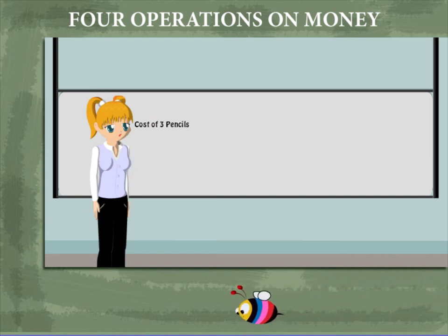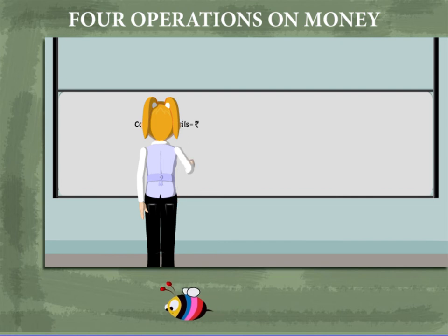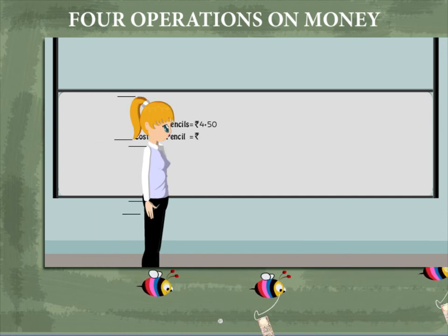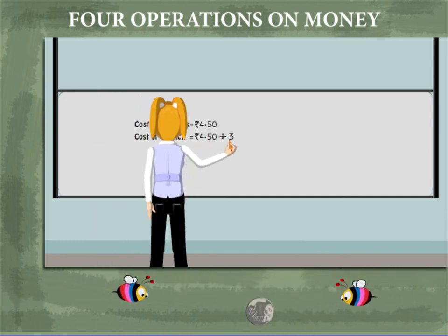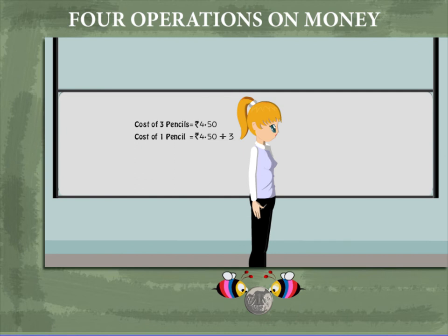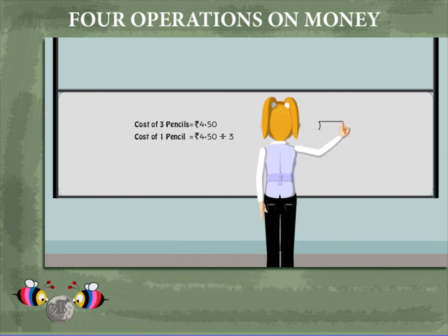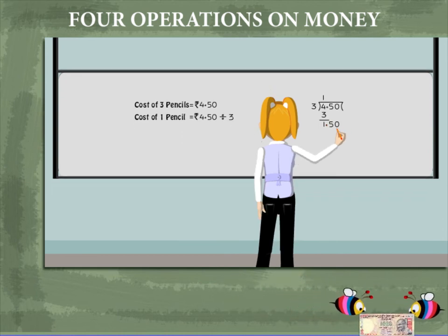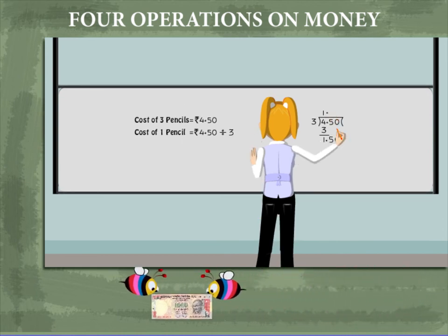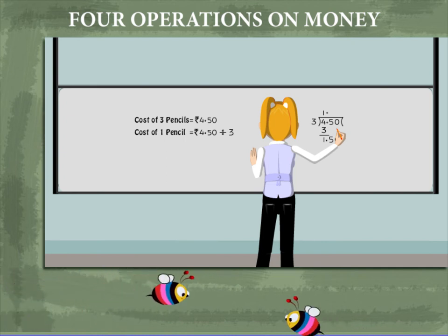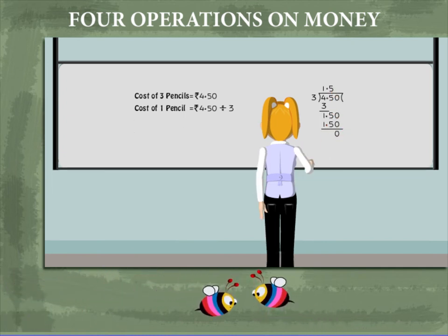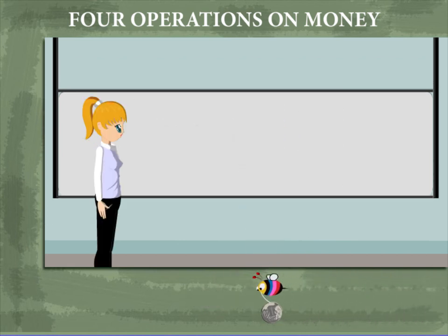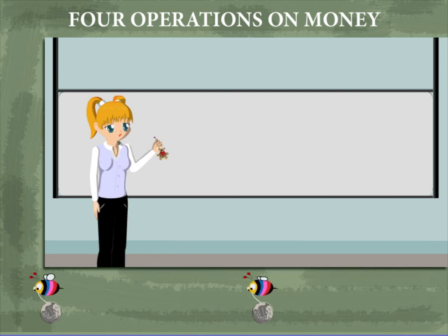Teacher Nancy has a question on the board. Cost of 3 pencils is rupees 4.50. What does 1 pencil cost? Nancy ma'am uses the long division method. She divides 4 by 3, gets 1. Copies the next digit but puts the decimal in the quotient. She writes 5 on the quotient line. So, 1 pencil is rupee 1.50.